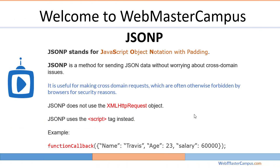In contrast to JSON, JSONP stands for JavaScript Object Notation with Padding. JSONP is a method for sending JSON data without worrying about cross-domain issues. It is useful for making cross-domain requests, which are otherwise often forbidden by the browser for security reasons. JSONP doesn't use the XMLHttpRequest object; it internally uses the script tag, so all communication happens using the script tag.